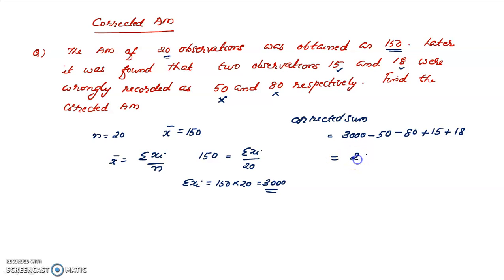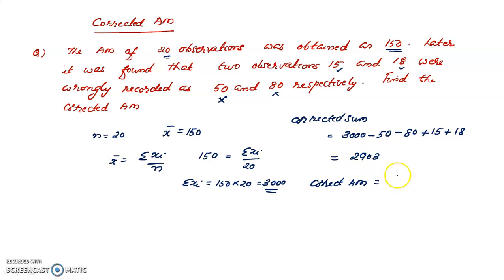We have a corrected sum of 2903. Therefore, the corrected arithmetic mean is equal to the corrected sum divided by n, where the number of observations remains the same.